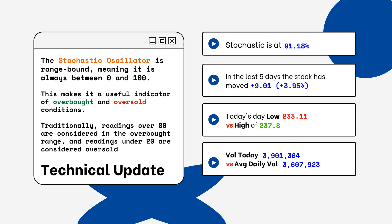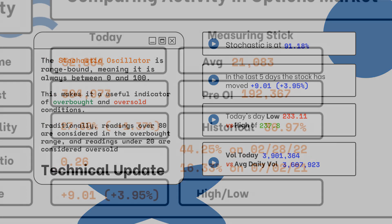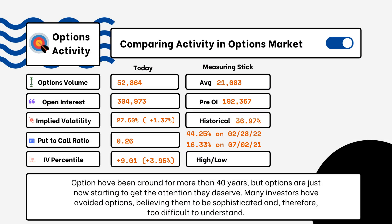We've also provided today's volume of shares traded and also the average daily volume. You want to see how much volume is being traded and if it is above or below the average daily volume level — this tells you how relevant the move is from the stock today.